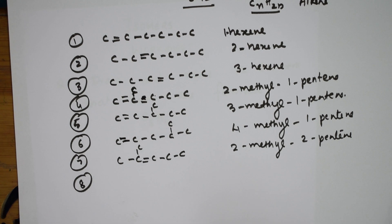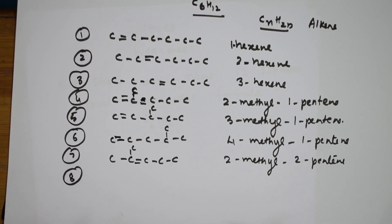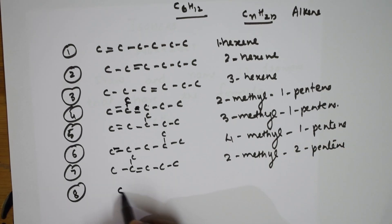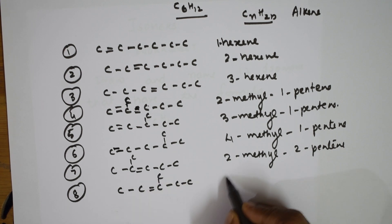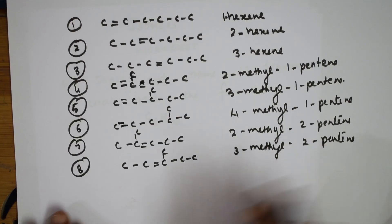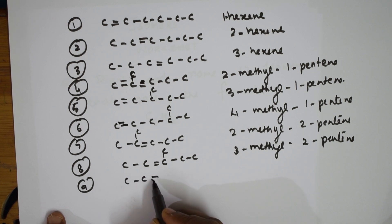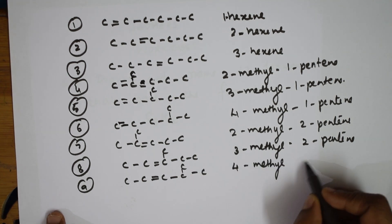Eighth isomer — the double bond stays at position two, and now we shift the methyl group. We have written 2-methyl-2-pentene. Now with the double bond at the second carbon, shift the methyl to the third position: this is 3-methyl-2-pentene. For the ninth isomer, shift to the fourth position — the double bond stays at carbon two — giving 4-methyl-2-pentene.